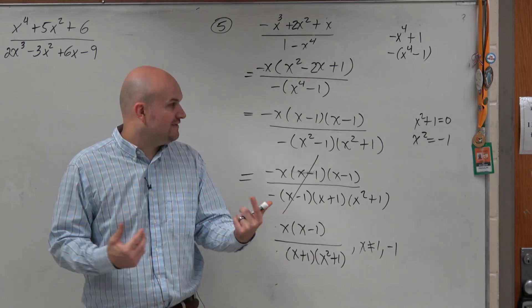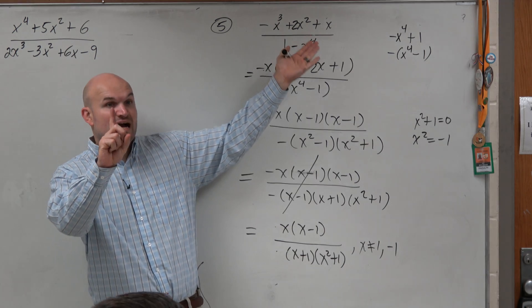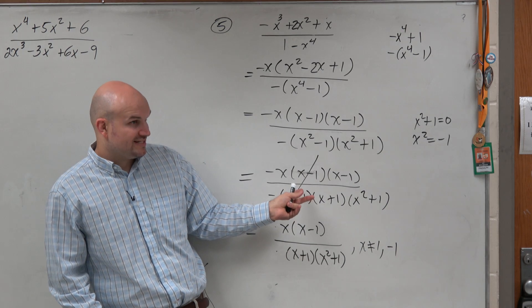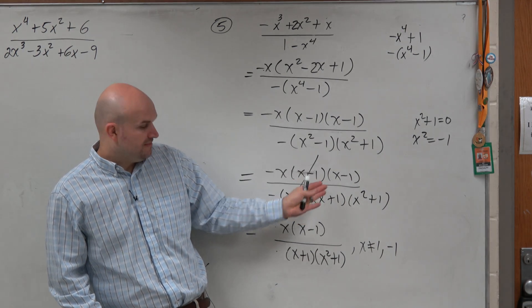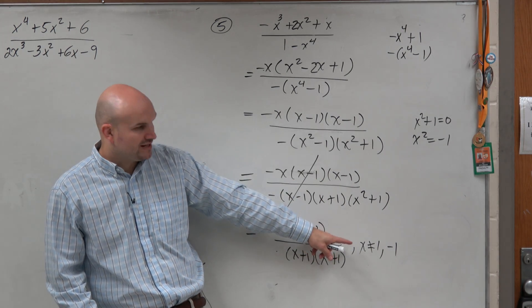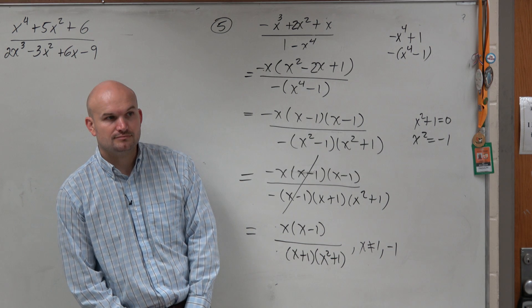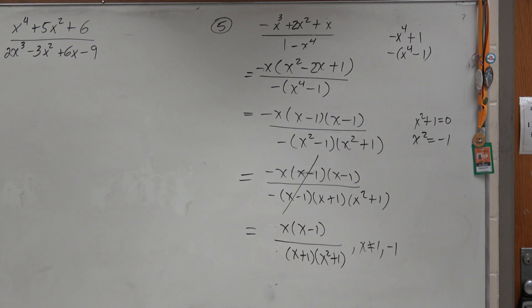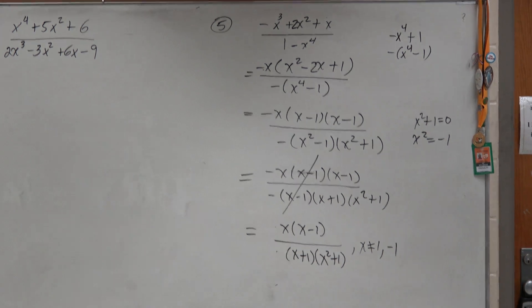So all I'm trying to advise you guys is step 1 is factor. But before you simplify it, identify those restrictions. Then you can simplify it, and then just write the restrictions at the end. There's at least one example for you guys. Now you guys have four problems up there on the board to go ahead.